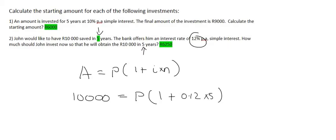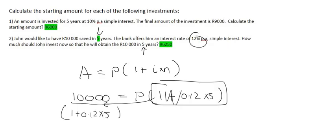Then what you do to get P by itself is you take this whole bracket to the left-hand side. You divide like that, and that'll get P by itself. And if you do that, you'll get an amount of 6,250 Rand.